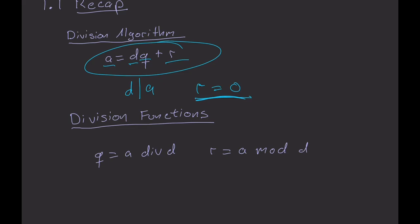Typically in this situation, we are most concerned with either the quotient or the remainder. So those get their own unique functions. For the quotient, we have a div d, which gives us the quotient regardless of what the remainder is.